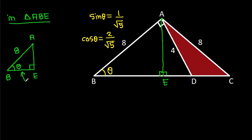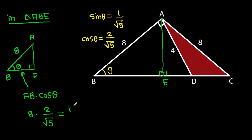AB is 8. So BE will be AB times cos theta, that is 8 times cos theta, which is 2 over root 5, giving 16 over root 5. So BE is 16 over root 5.